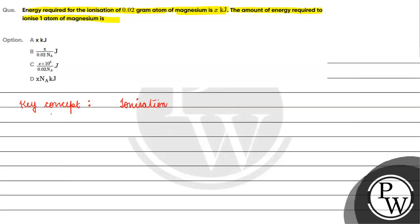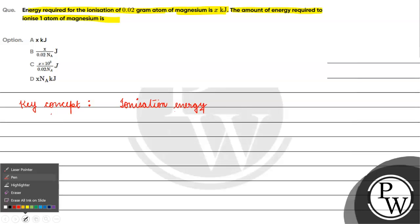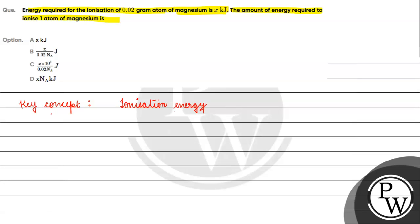The key concept is ionization energy. What has been given to us: the energy used for ionization of 0.02 gram atom — this means 0.02 moles of magnesium. For ionization, x kilojoule of energy is used.